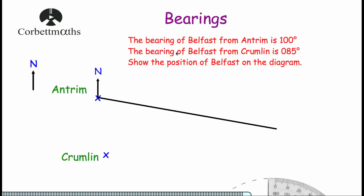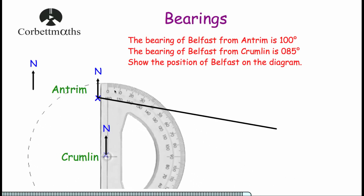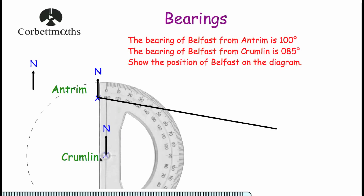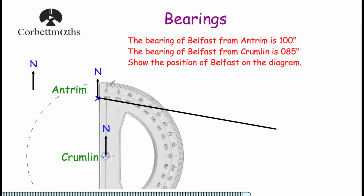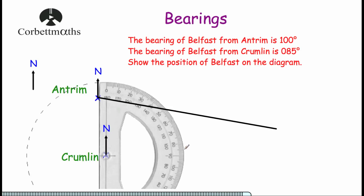Now let's have a look at Crumlin. We know the bearing of Belfast from Crumlin is 085 degrees or 85 degrees. So let's draw our north line at Crumlin, then get our protractor and line it up with the cross at the centre on top of Crumlin and our 0 along the north line. We want to find where 85 degrees is, going clockwise from 0: 10, 20, 30, 40, 50, 60, 70, 80 — and 90 — so 85 is right there in the middle.